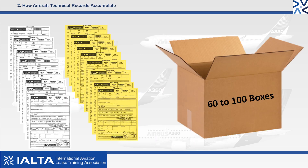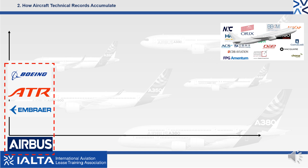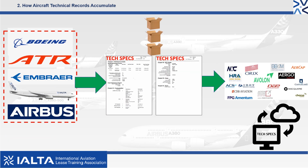One aircraft could have between 60 to 100 boxes of technical records accumulated during its lease. Let's start with an aircraft coming off the production line from the OEM and going to a lessor. The OEM will supply the lessor with a set of delivery documents that will be uploaded to the lessor's IT system and form what's commonly known as the aircraft technical specifications.